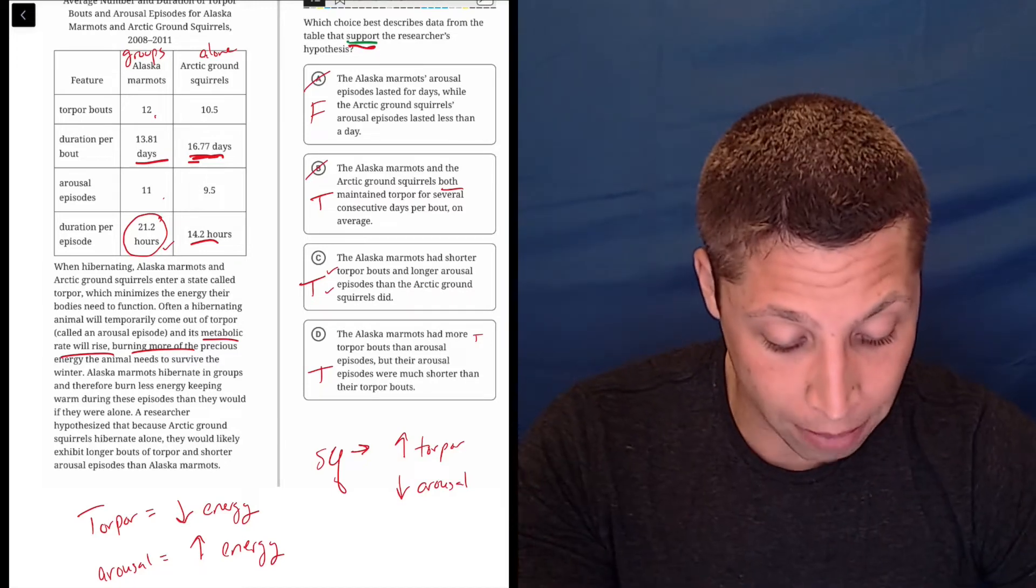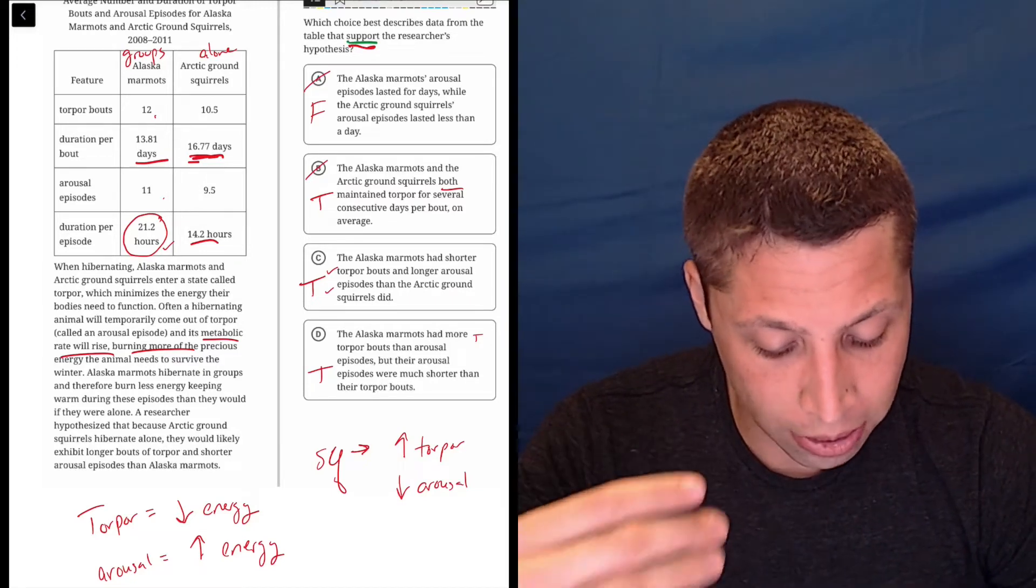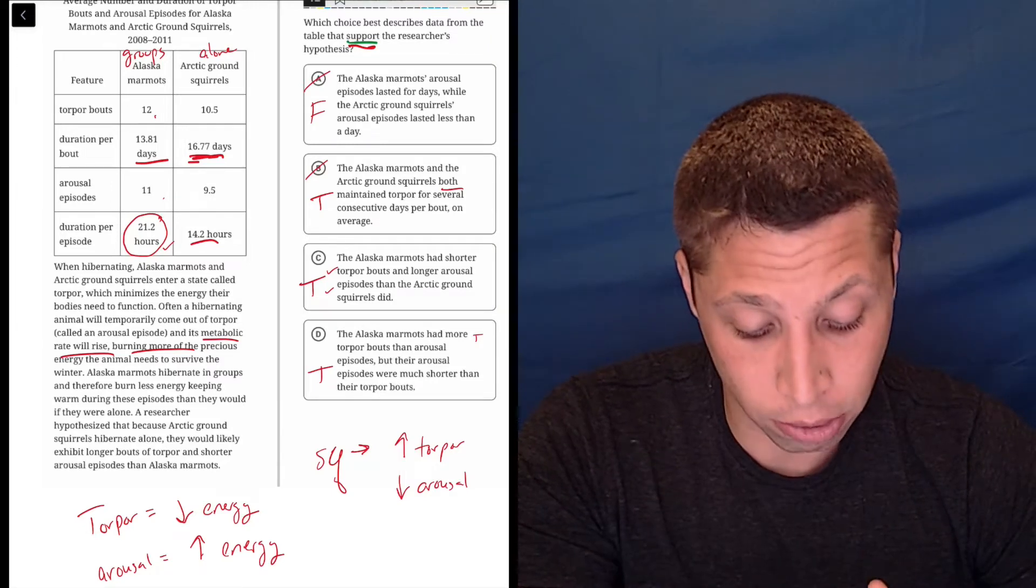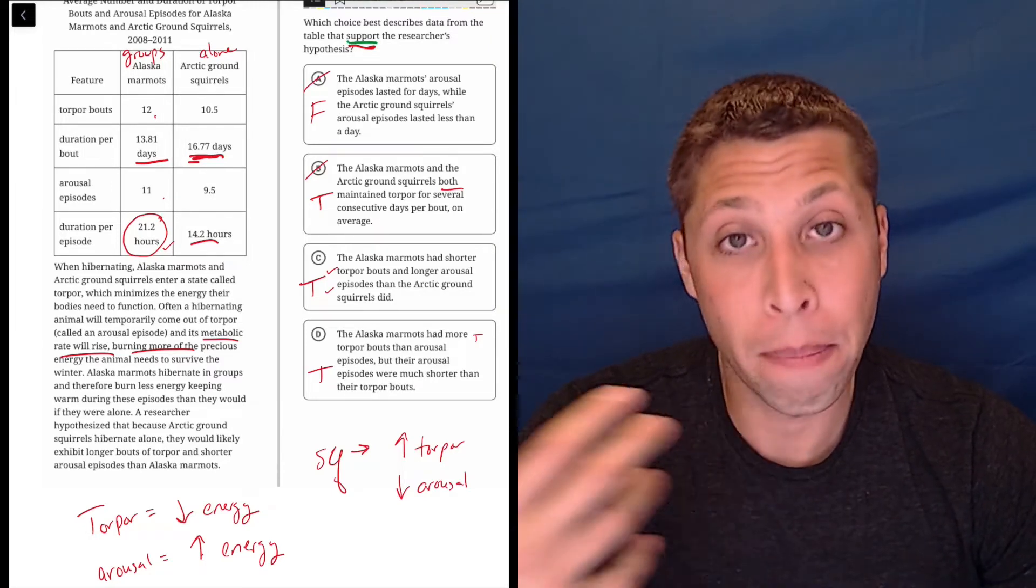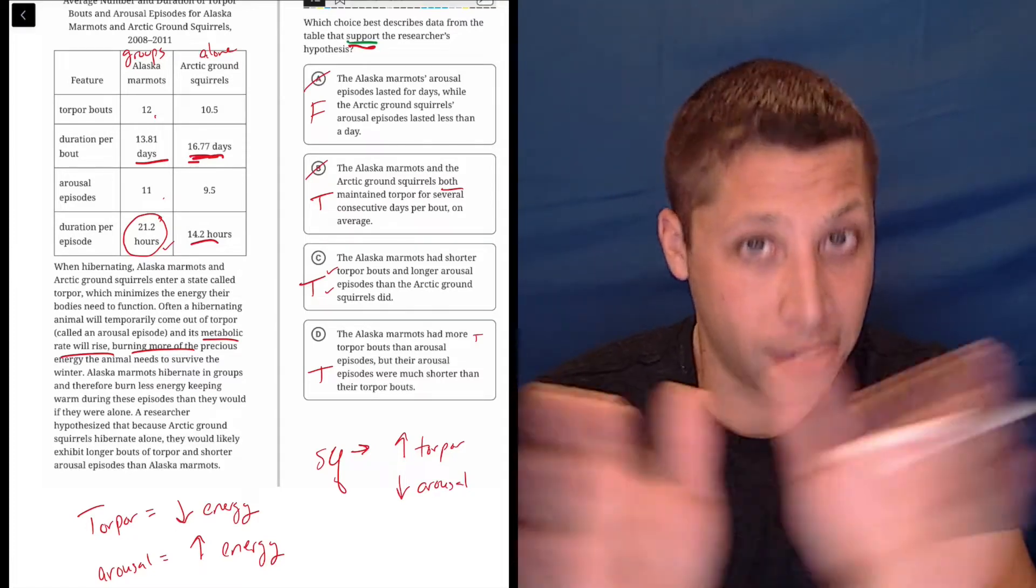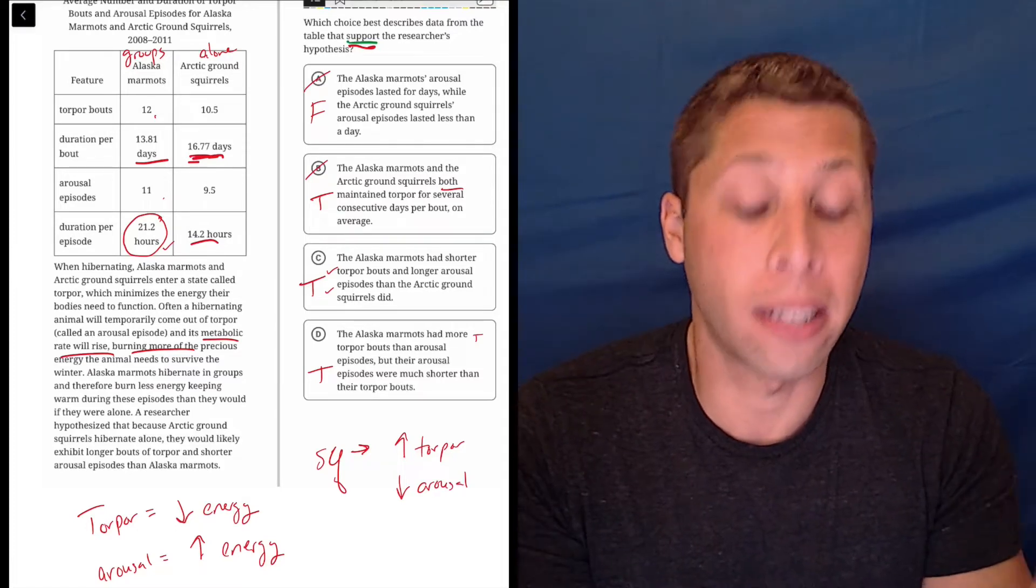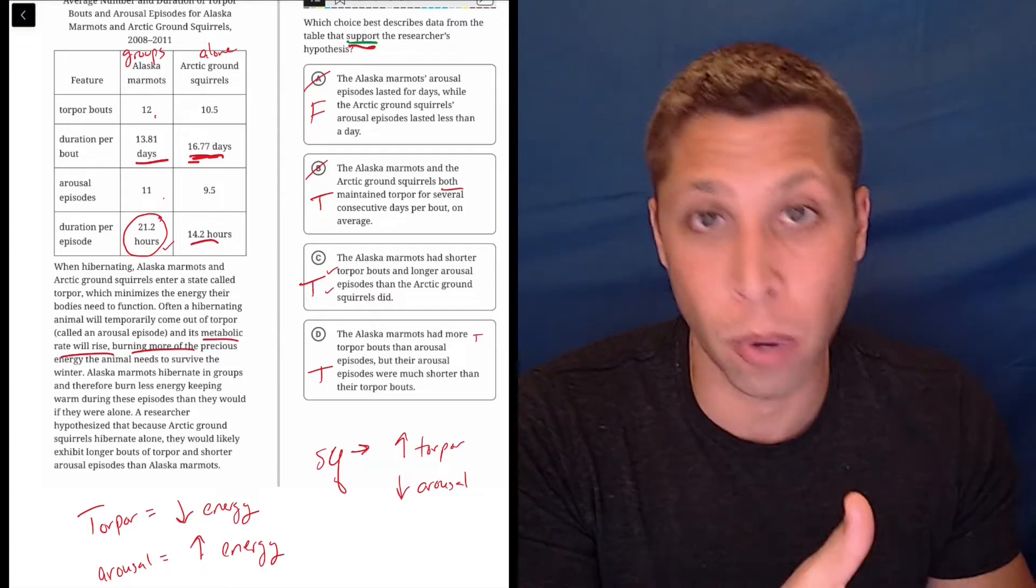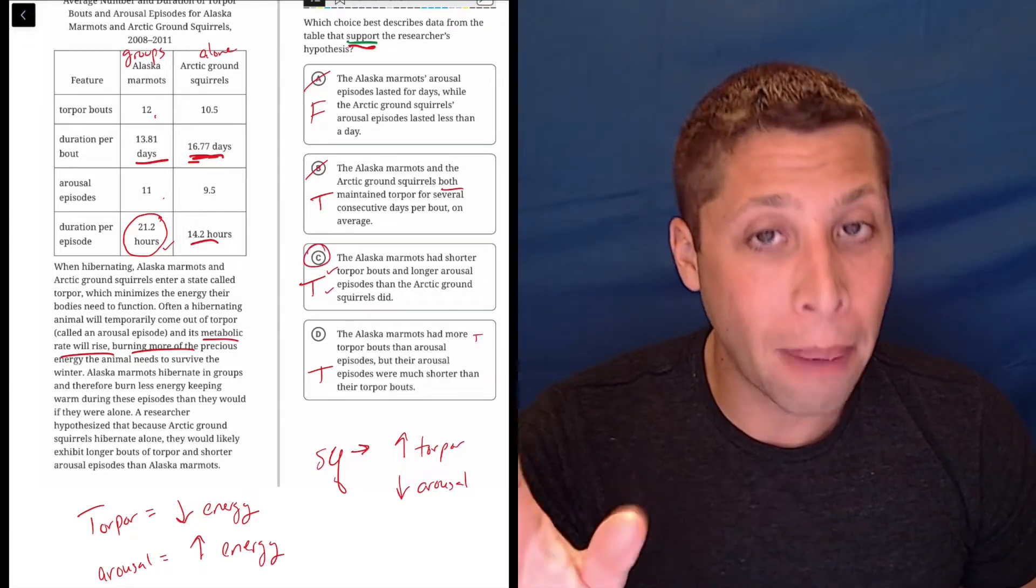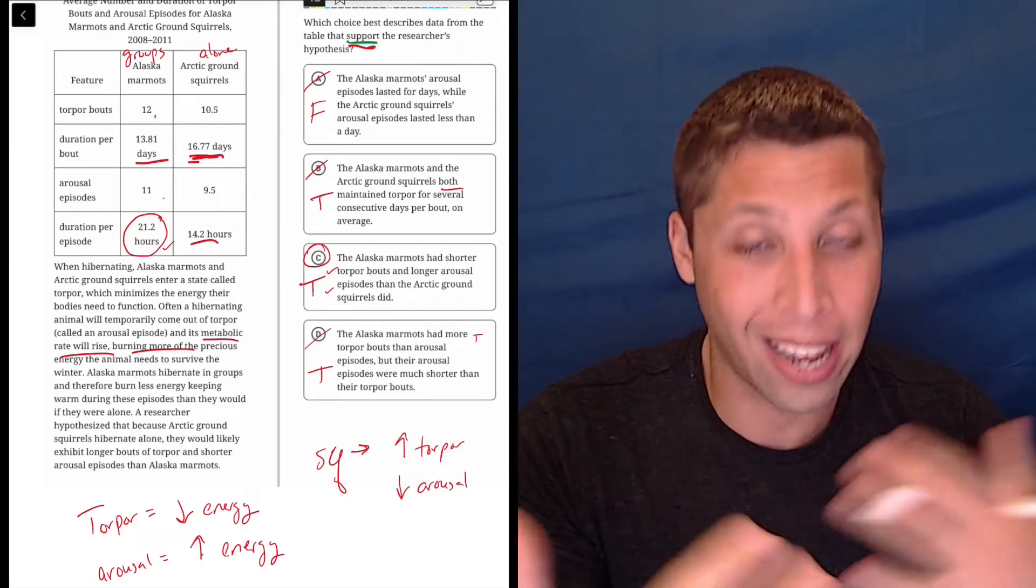Because it's about both of them. It's comparing them and it's saying that they're different. The marmots had shorter bouts and longer arousals than the arctic ground squirrels. So they're comparing them in a way that shows a difference. That's the point of the hypothesis is to say that these two animals have a difference because one hibernates in groups, one hibernates alone. So just for that reason, even if I was confused, I might go with C because it's the only one that's kind of comparative.